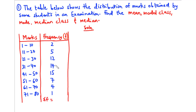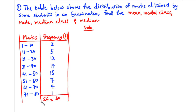19 plus 14 is 33. 33 plus 15 is 48. Plus 7 is 55. Plus 4 is 59. And then plus 1 is 60. So sum of f is 60, which means 60 students took the examination.